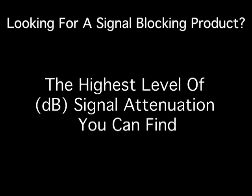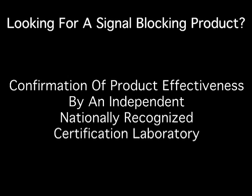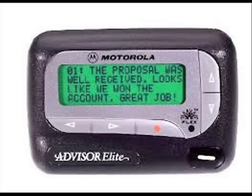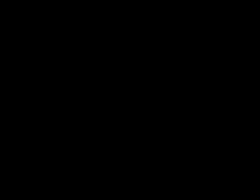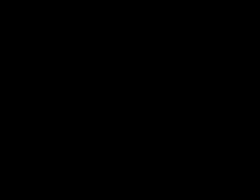Get yourself a signal-blocking product that works and get yourself a one-way alphanumeric pager. Modify the outgoing message on your voicemail — at the end of it say, 'If this matter is really urgent, please send me a page or text at this number.' And there you go. You've blocked third-party intrusion into your cell phone and you've maintained connectivity with the outside world. Is it perfect? No. But I didn't create the problem — I'm just trying to give you one path around it.